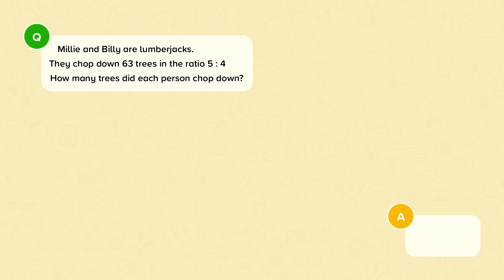Let's now apply this to a question where we'll be sharing into a ratio. Millie and Billy are lumberjacks. They chopped down 63 trees in the ratio five to four. How many trees did each person chop down? So here we have a ratio, but we have an extra bit of information. The total amount of trees they cut down. And we must see how much they cut down each.